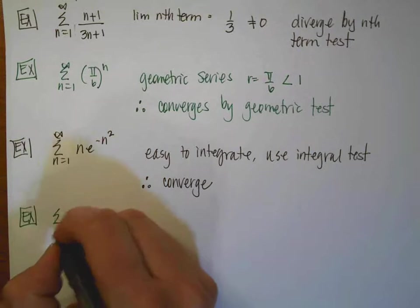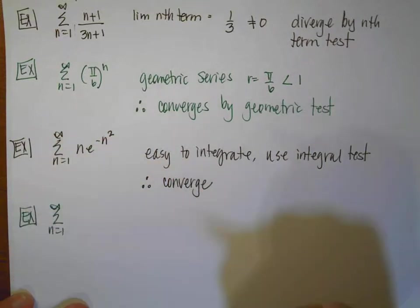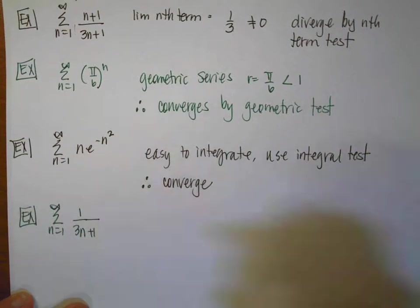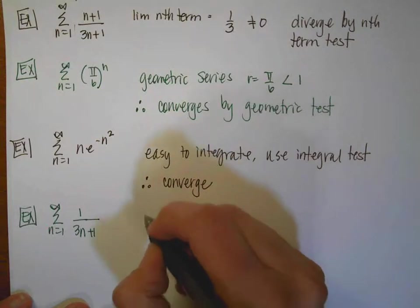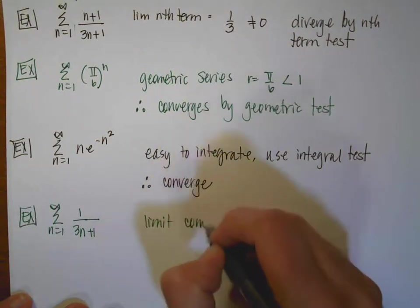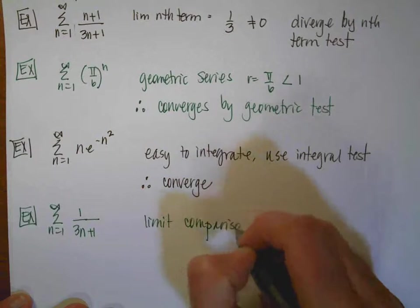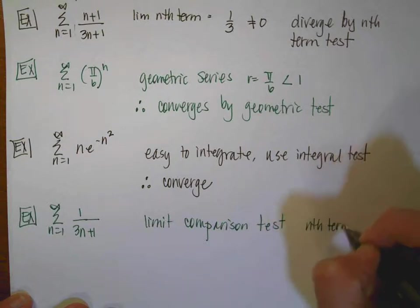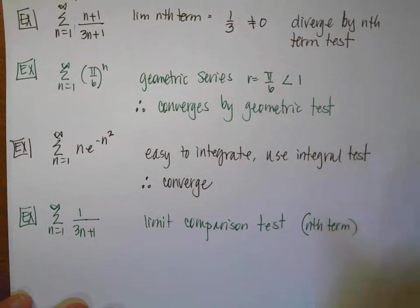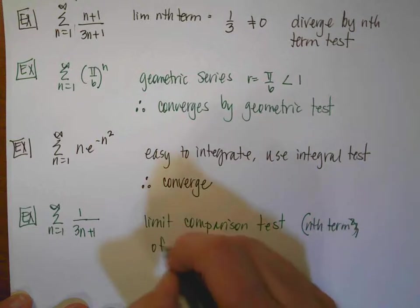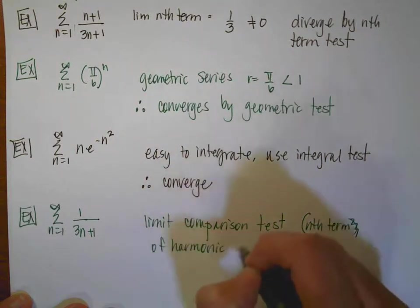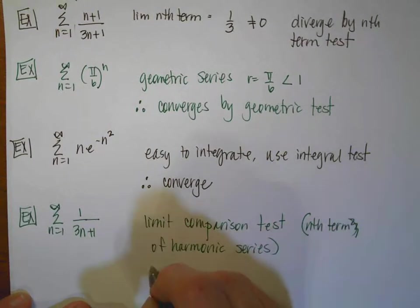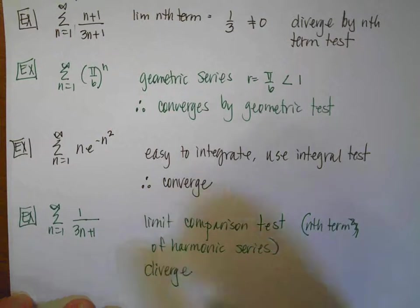So for the next one, if I have the sum from n equals 1 to infinity of 1 over 3 to the n plus 1, we could do a limit comparison test, and I would compare it to the nth term of a harmonic series. And then because that happens, this is going to diverge.